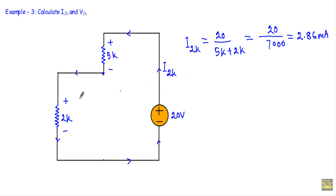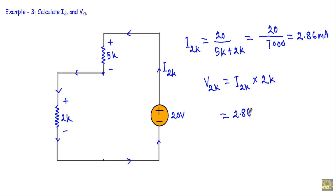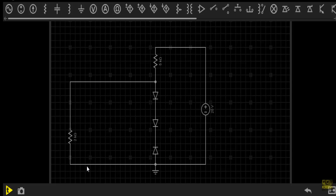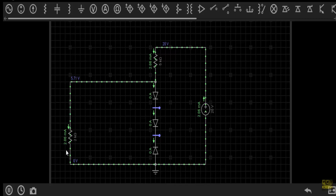Now that I know the current through the 2kΩ resistor is 2.86 mA, I can find the voltage drop using Ohm's law: V = I × R = 2.86×10⁻³ × 2000 = 5.72 V. The circuit simulation confirms this — the current through the path is 2.86 mA and the voltage across the 2kΩ resistor is 5.71 V, matching our calculated values.